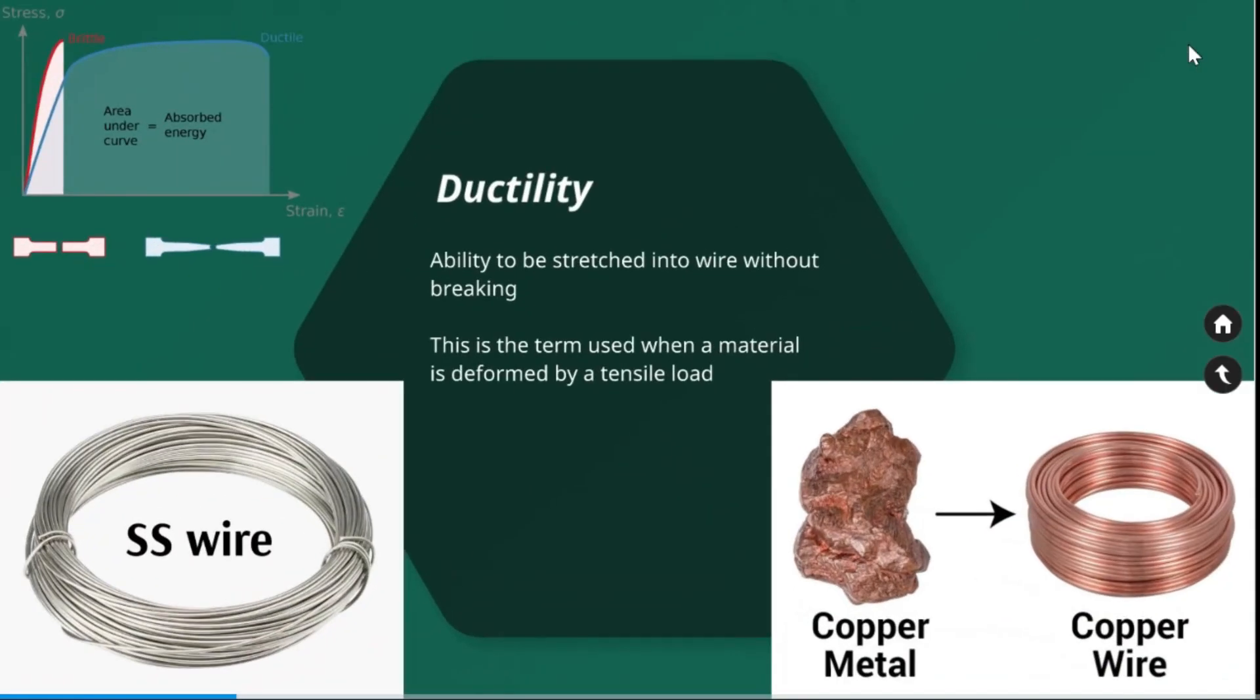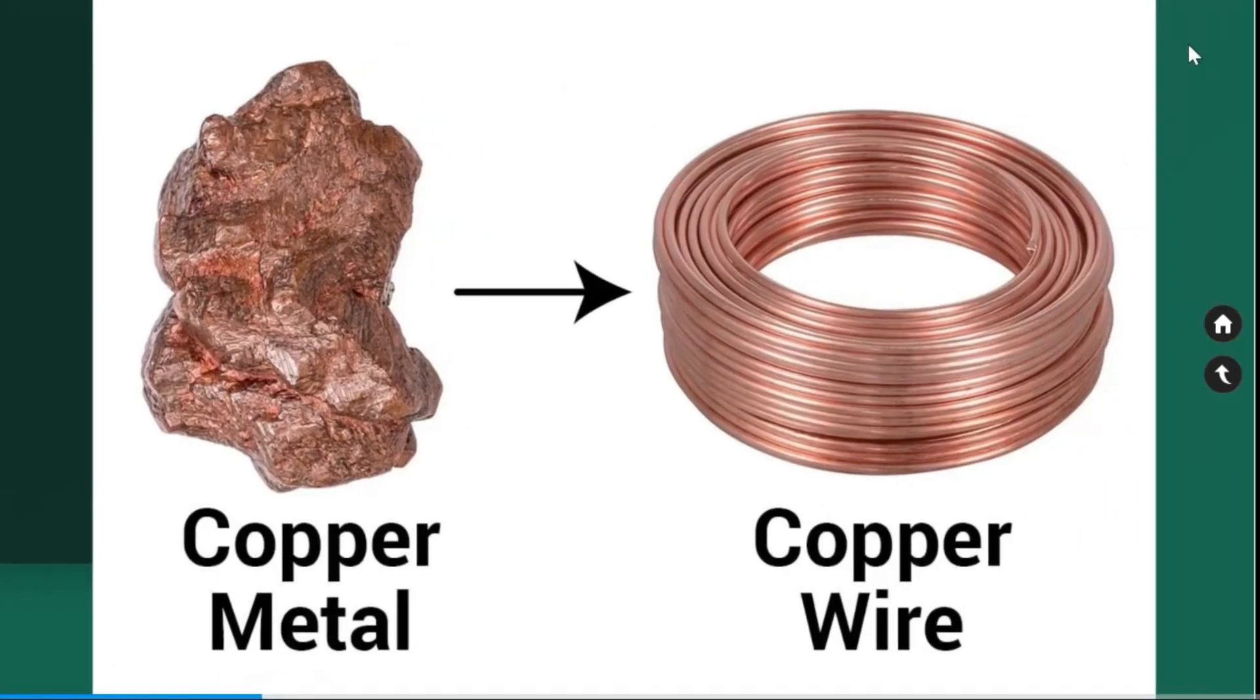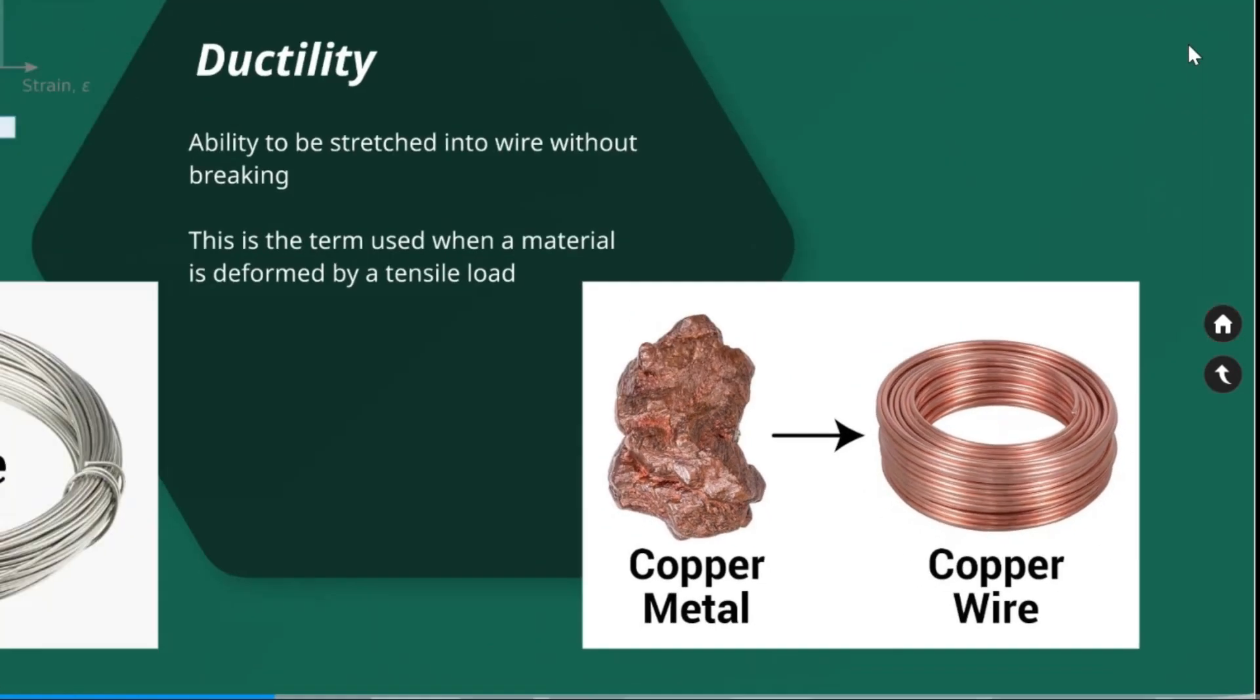Ductility. The ability of a material to be stretched into wire without breaking is called ductility. This is the term used when a material is deformed by a tensile load. You can see an example of SS and copper which are stretched into the wire shape.